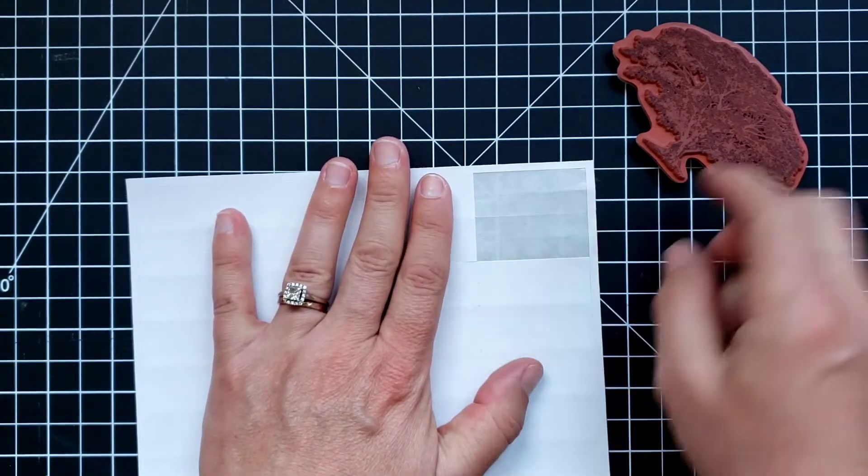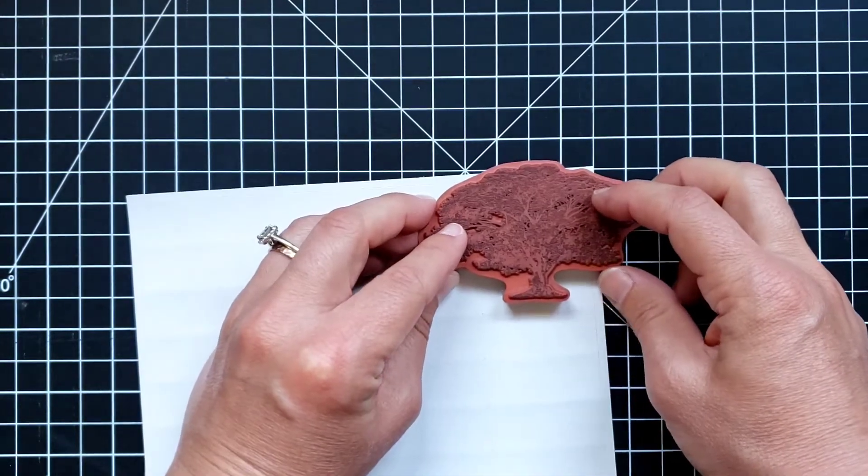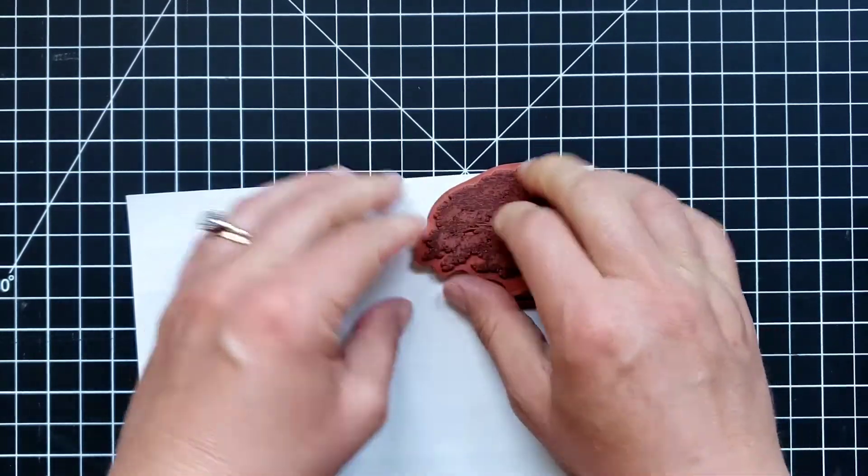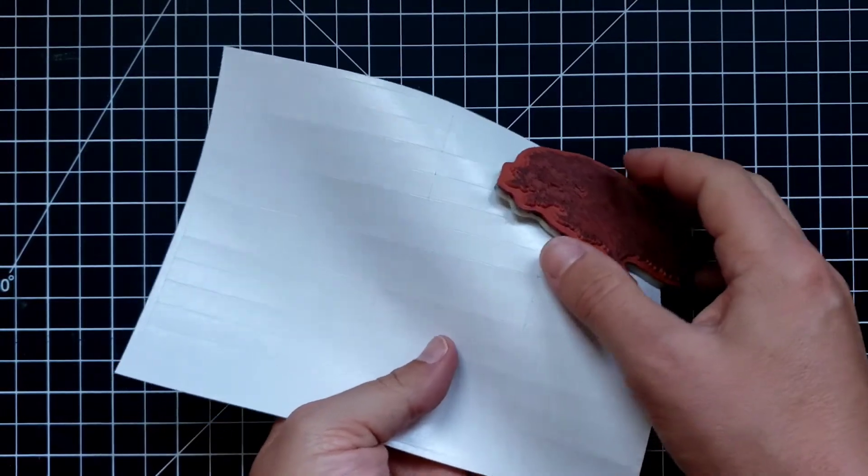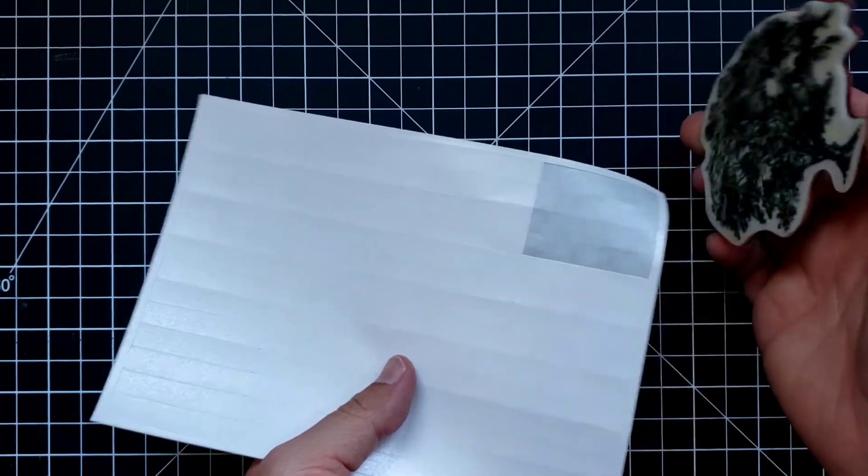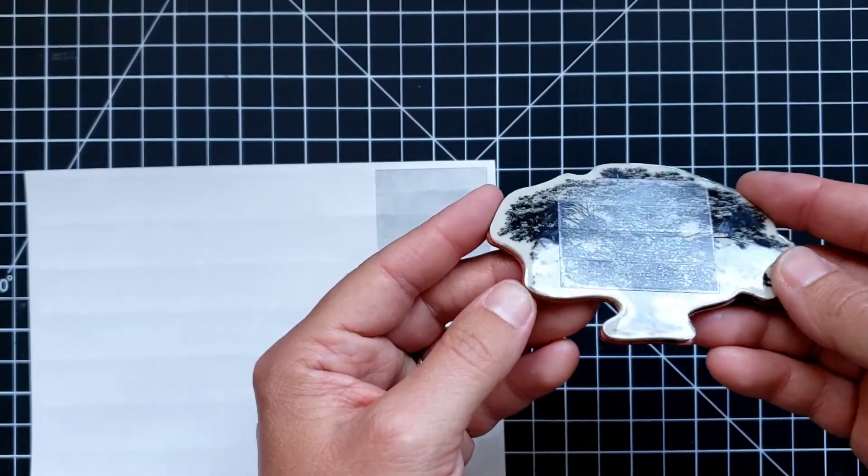Okay, that adhesive is still stuck to the paper. Now I'm going to lay this over top so that that adhesive is not sticking out over the edge. Give it a good press and just fold the backing and peel that stamp off.